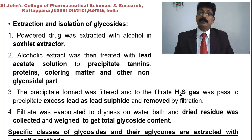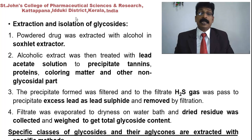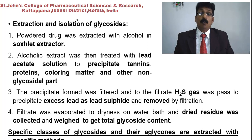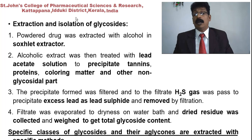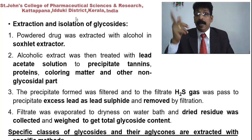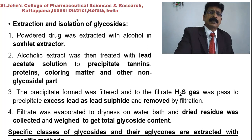For extraction and isolation of glycosides: powdered drug is extracted with alcohol in a Soxhlet extractor. The alcoholic extract is treated with lead acetate solution to precipitate tannins, proteins, coloring matter, and other non-glycosidal substances. The precipitate is filtered, and to the filtrate hydrogen sulfide gas is passed to precipitate excess lead; the lead sulfide is removed by filtration. The filtrate is evaporated to dryness on a water bath and the dried residue collected — this gives the total glycoside content. Specific classes of glycosides have their own extraction methods, but this is the general method.